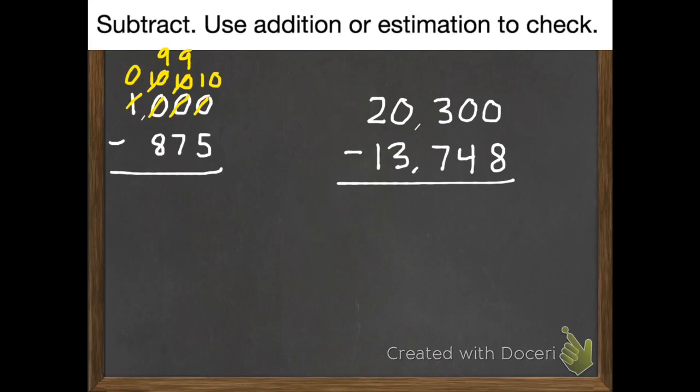Ten subtract 5 is 5. Nine subtract 7 is 2. Nine subtract 8 is 1. Zero subtract zero is zero. So we're good with 125. To check my work, 125 plus 875 equals 1,000.